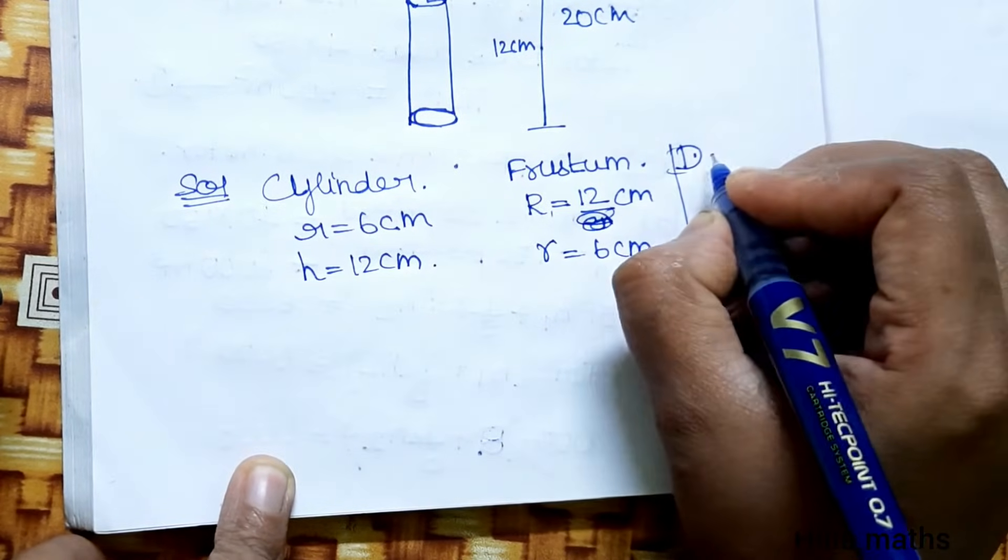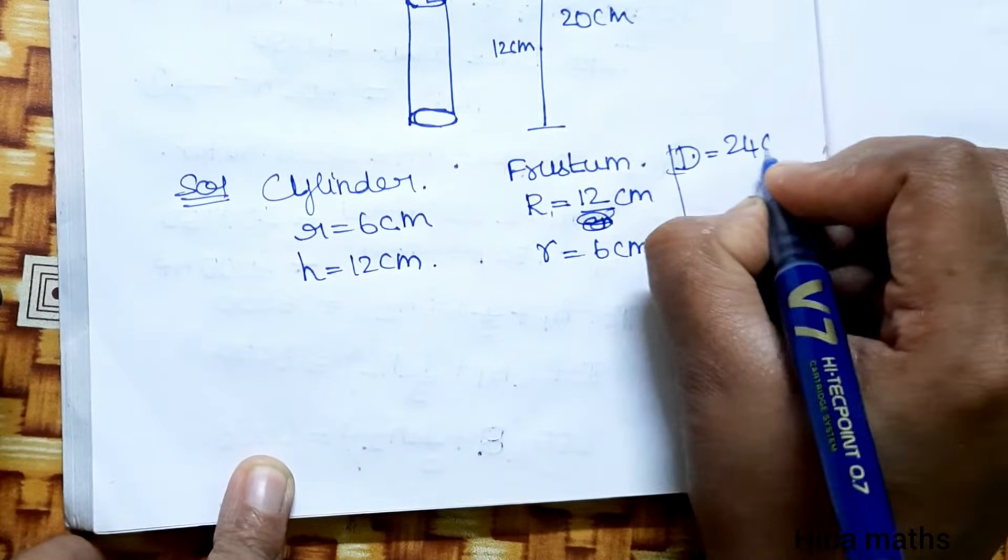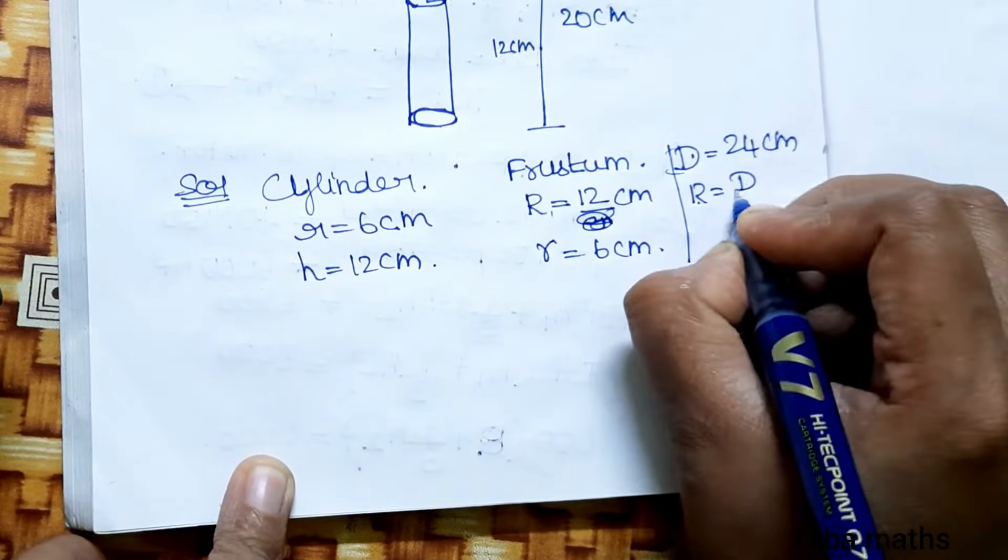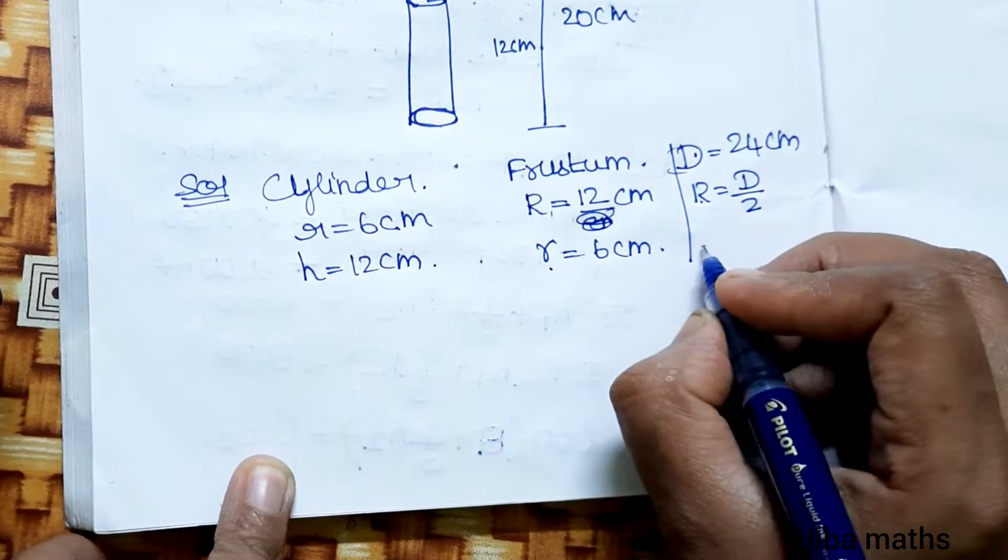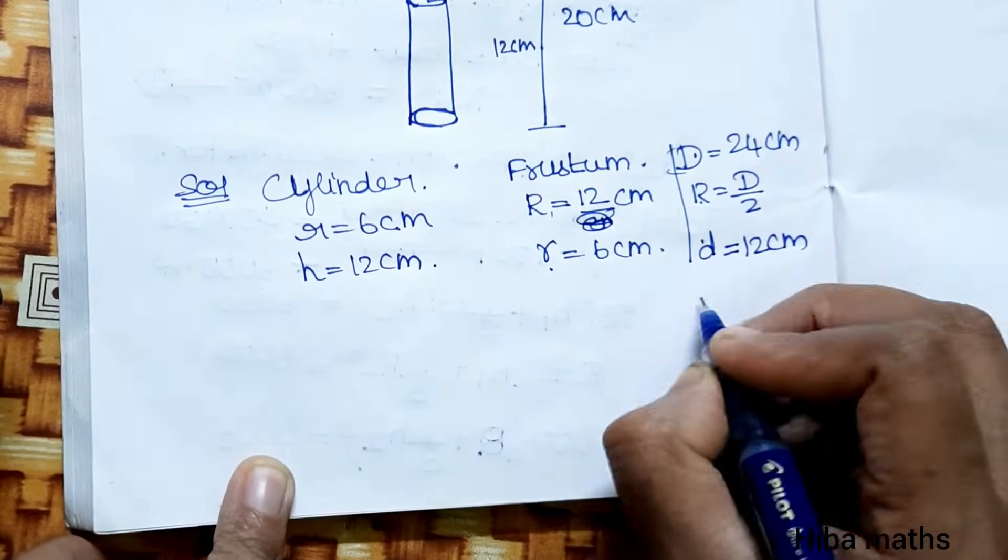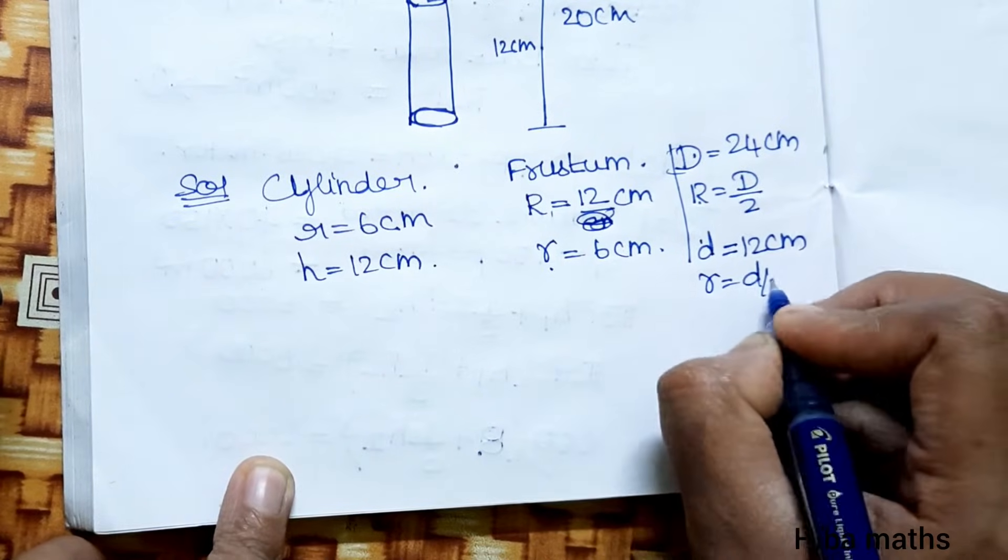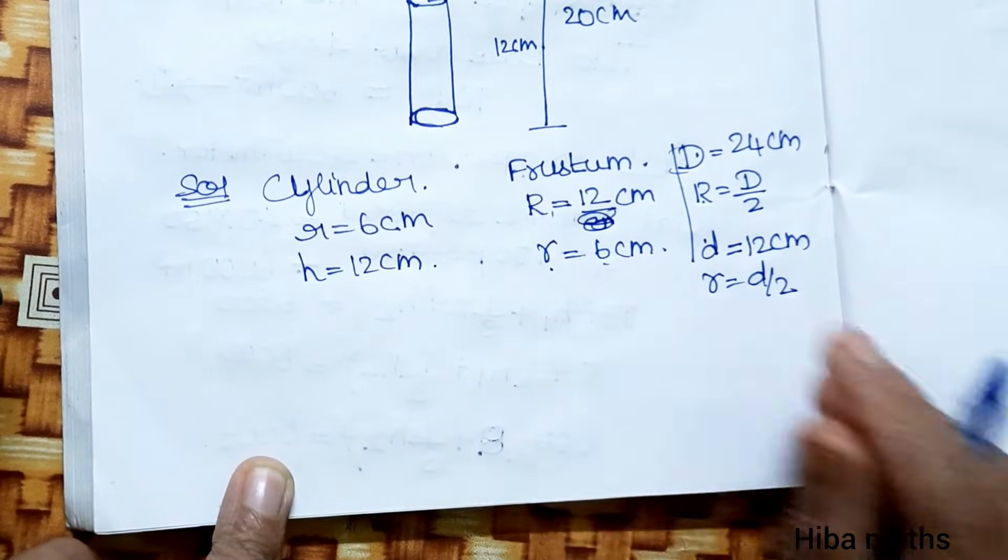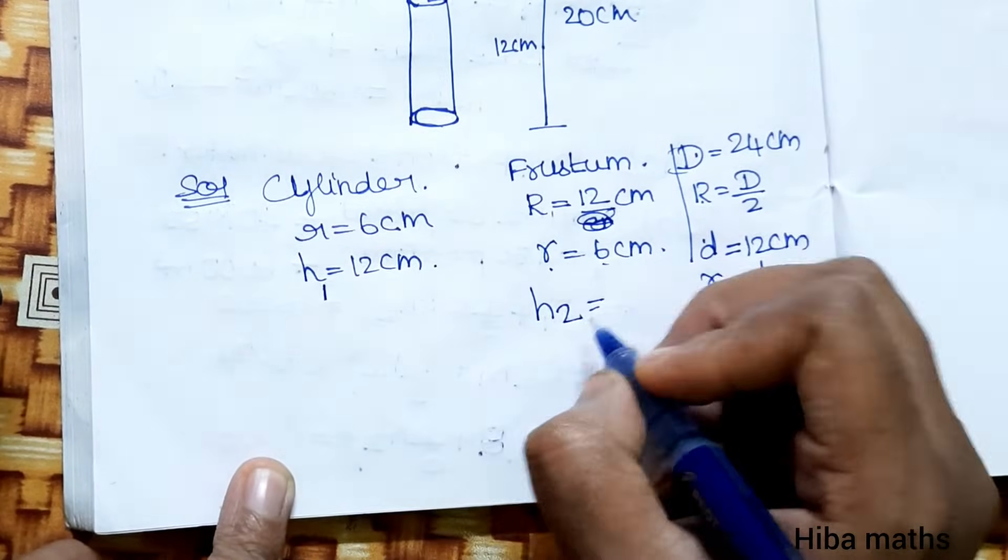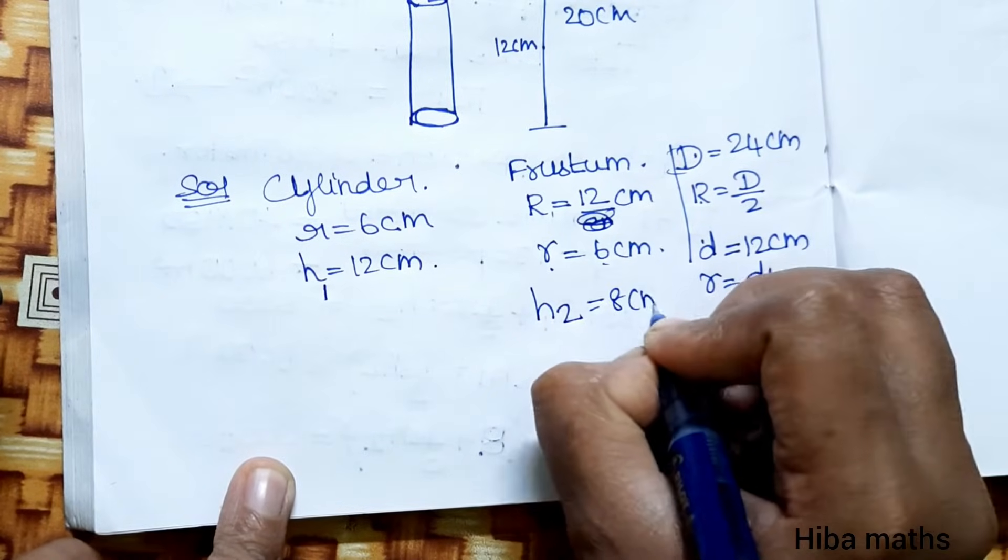Capital D is 24 cm, therefore capital R equals D by 2, that is 12. Small d equals 12 cm, small r equals d by 2, that is 6. The frustum height h is 8 cm.